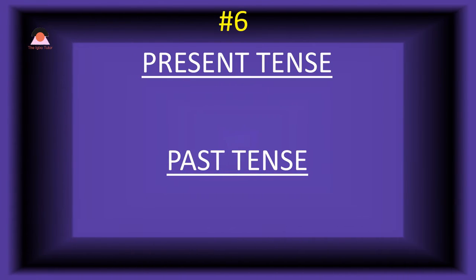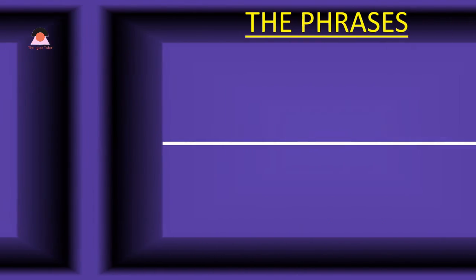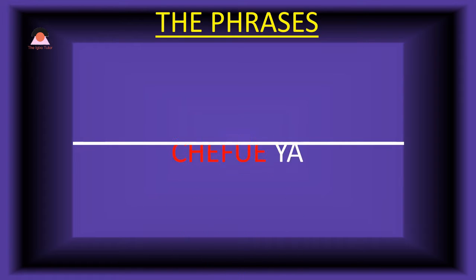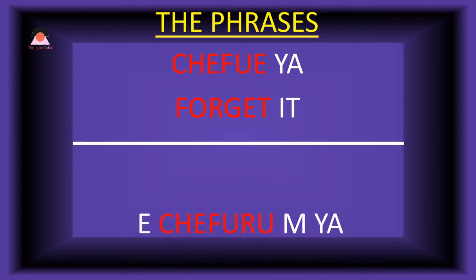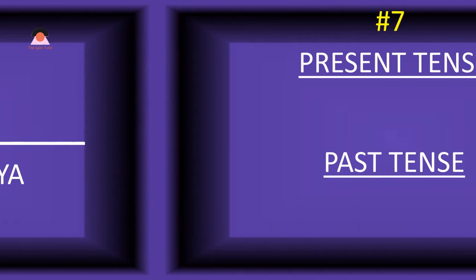Word number six. Present tense: 'chetfue,' which means 'forget.' The past tense of chetfue is 'chetfuru,' meaning 'forgot.' Present tense phrase: 'chetfueya,' which means 'forget it.' Past tense: 'e-che furu mia' — I forgot it.